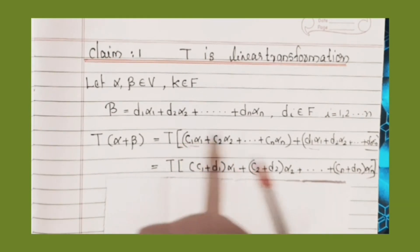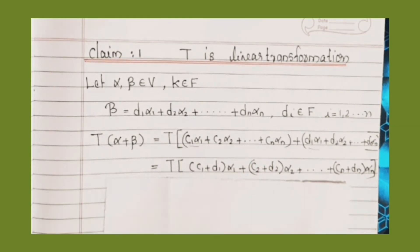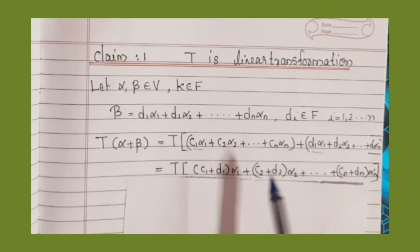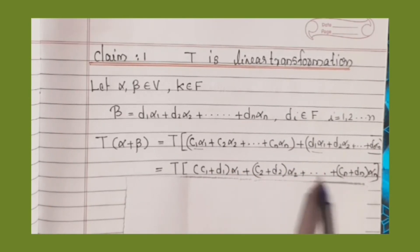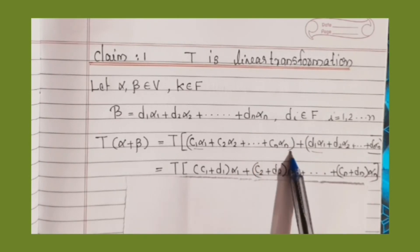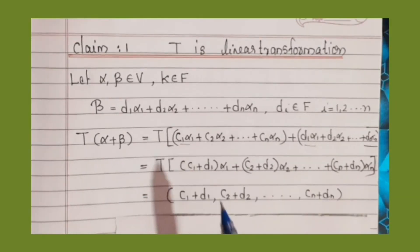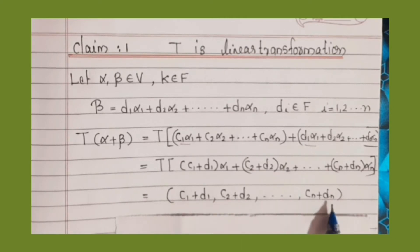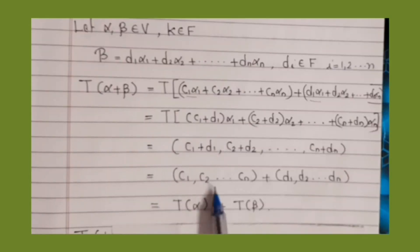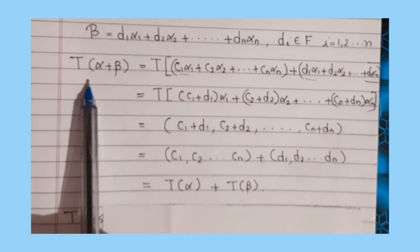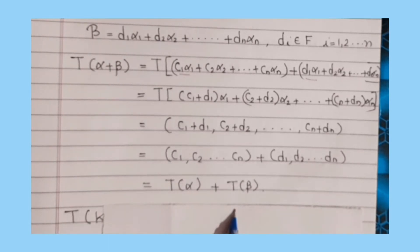Combining terms: T(α + β) = T((c₁+d₁)α₁ + (c₂+d₂)α₂ + ... + (cₙ+dₙ)αₙ) = (c₁+d₁, c₂+d₂, ..., cₙ+dₙ) = (c₁, c₂, ..., cₙ) + (d₁, d₂, ..., dₙ) = T(α) + T(β).